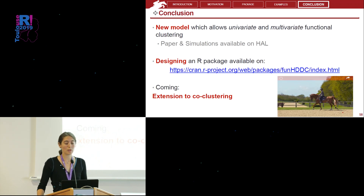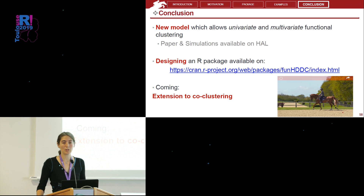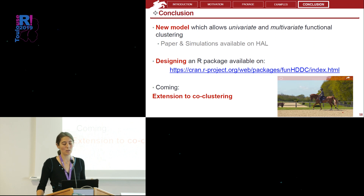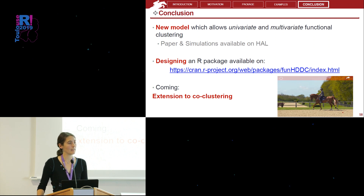To conclude, we have developed a new model allowing univariate and multivariate functional clustering, whose paper and simulations are available online. We have also released our package, which is available on CRAN. We are currently working on the extension of this model to co-clustering, in order to simultaneously cluster rows and columns of multivariate functional datasets. Thank you.